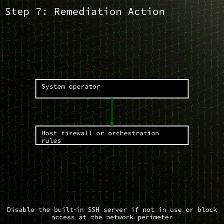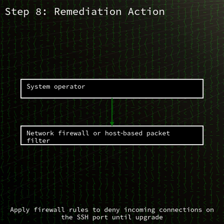CVE 2025-32433 poses a severe risk for any organization running affected Erlang OTP SSH servers. With public exploits out, patching to the latest OTP release should be your top priority. Disable or shield the SSH service until you can apply the update, and monitor logs for any suspicious connection attempts.